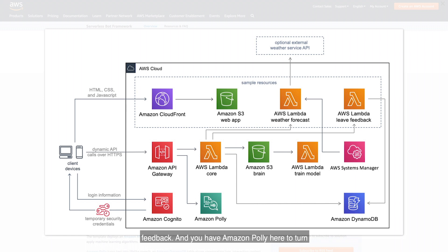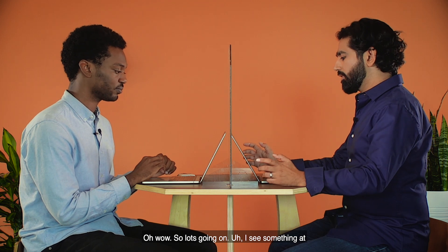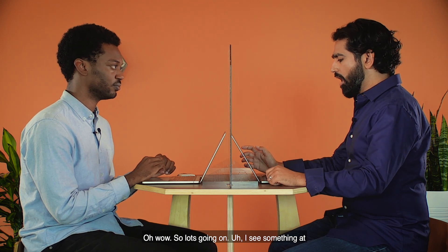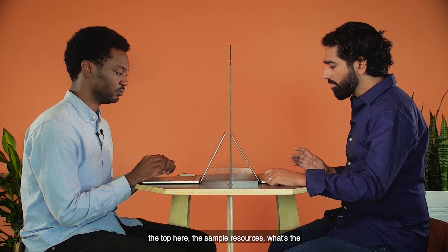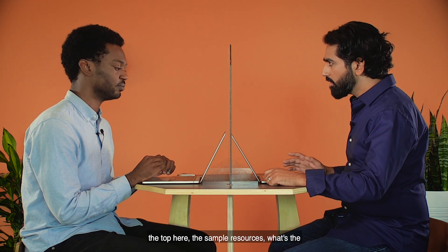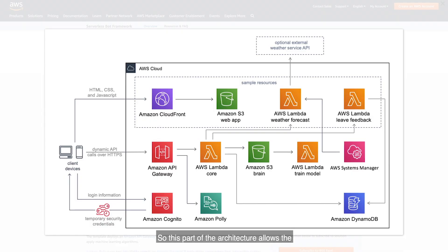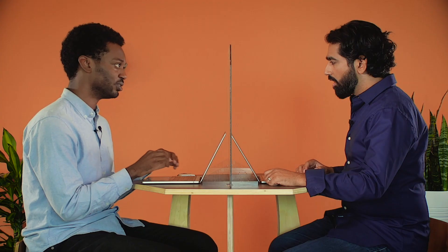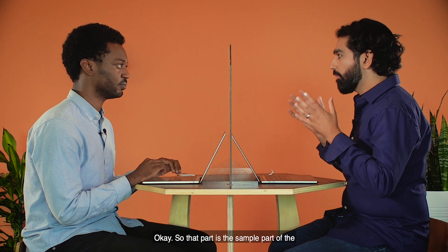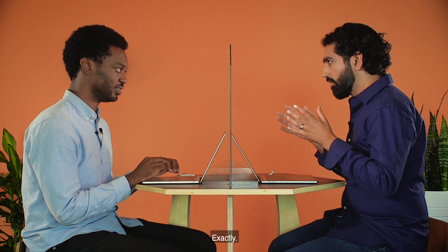And you have Amazon Polly here to turn text into lifelike speech. I see something at the top here — the sample resources. What's the story behind that? This part of the architecture allows customers to get started and running quickly using some sample resources provided with the solution. So that part is the sample part of the application. Exactly.